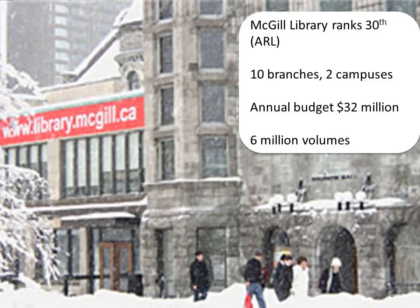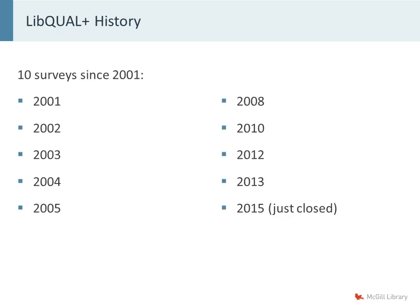Historically McGill has a long and fruitful relationship with LibQual. This year was the 10th iteration of the LibQual survey, and since its beginning McGill has been using the survey to inform service improvements. As a result we have a lot of historical data and experience getting the LibQual reports and results and trying to use them to make changes. My role as assessment librarian only began in September of 2012.